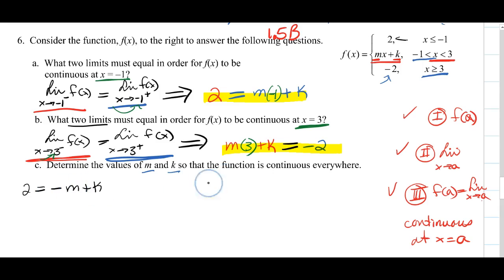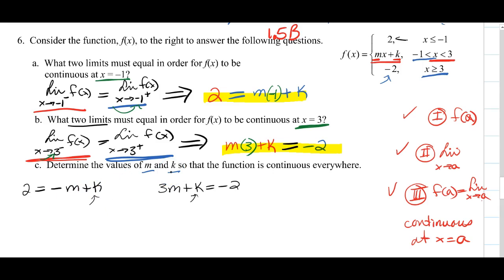Simplified, the first equation is: 2 equals negative m plus k, and the second is: 3m plus k equals negative 2. To solve this system, I can solve both equations for k and set them equal to each other to find m. Alternatively, you could subtract to eliminate k. Several methods work — elimination or substitution. I like the substitution method.